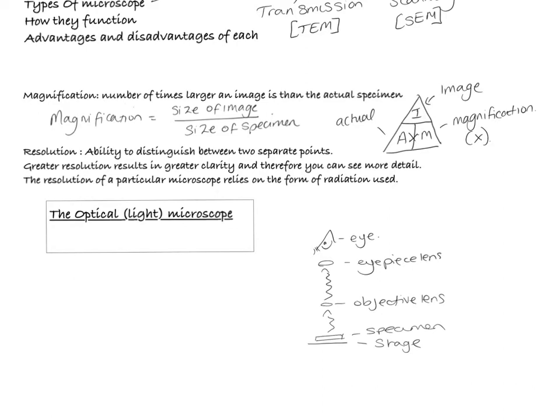In general, the best optical microscopes have a magnification of up to times 1500 and a resolution of up to 200 nanometers.